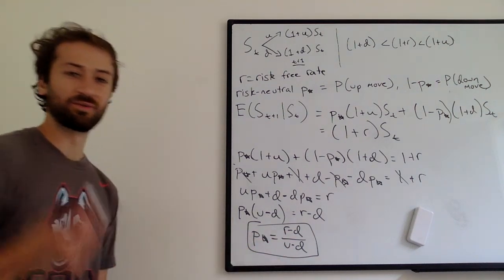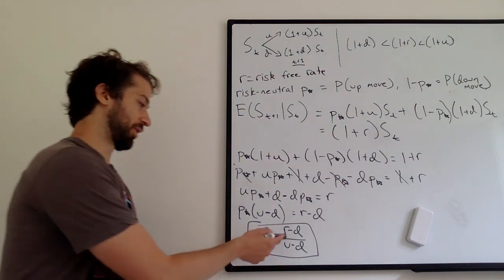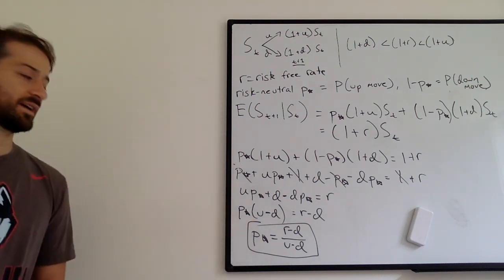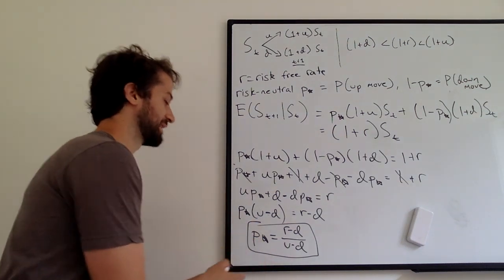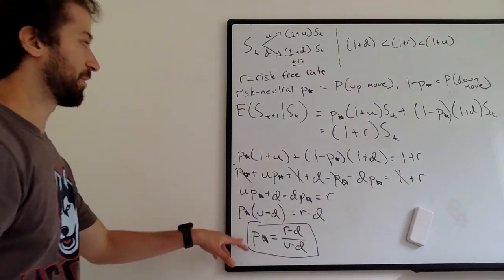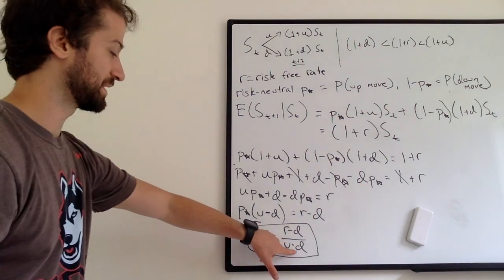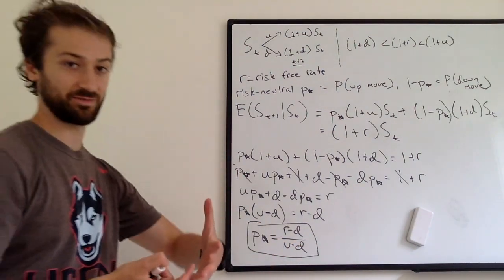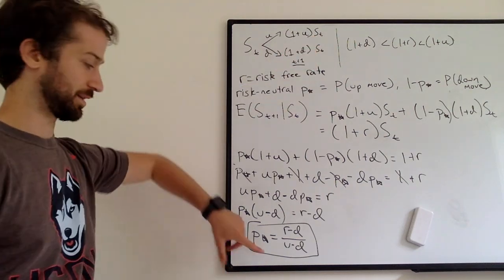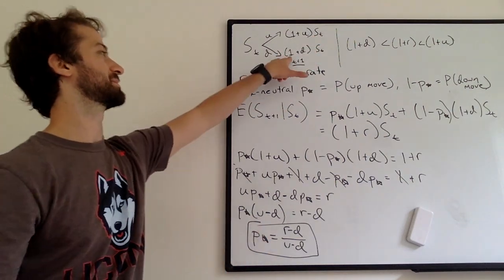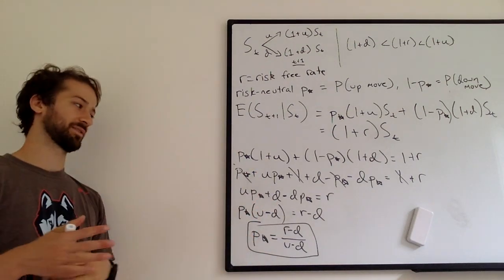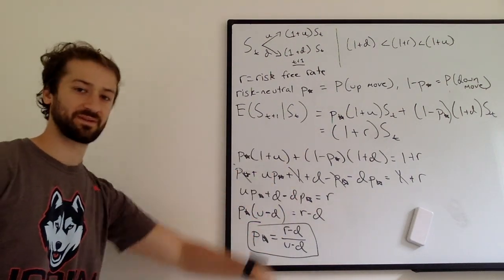Remember R and D and U are known. You can imagine that R is 5%, D is 3%, U is 7%. And what this says is that P star, R minus D over U minus D, if the probability of the stock moving up or down equals this, then in expectation, this times 1 plus U S sub T plus 1 minus this times 1 plus D S sub T is going to equal 1 plus R S sub T.